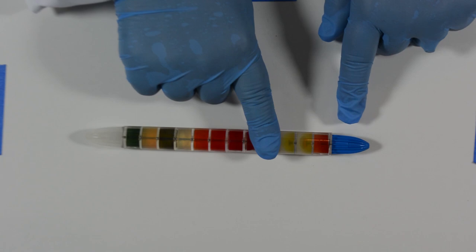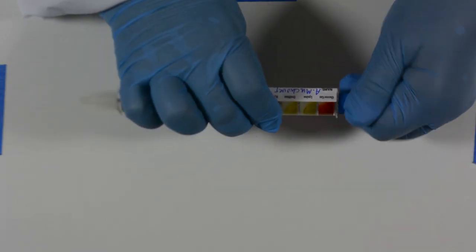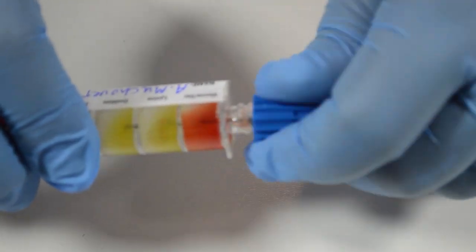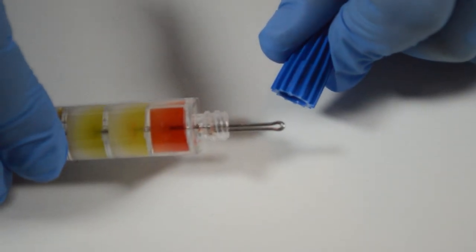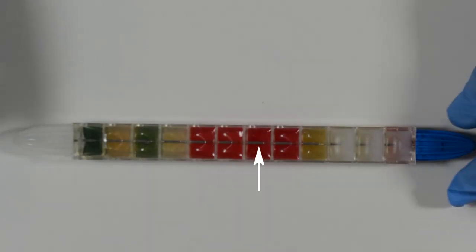When you look at the entero pluri, you see two ends. This end has a blue cap. Under the blue cap is a little handle to pull the wire that goes down the center of the tube. If you look at it this way, you can see this wire going through the center of the tube.